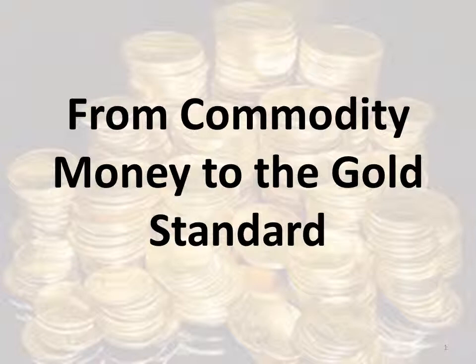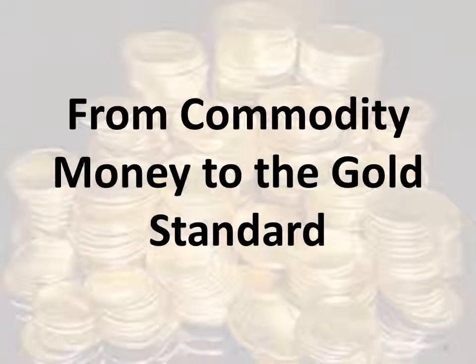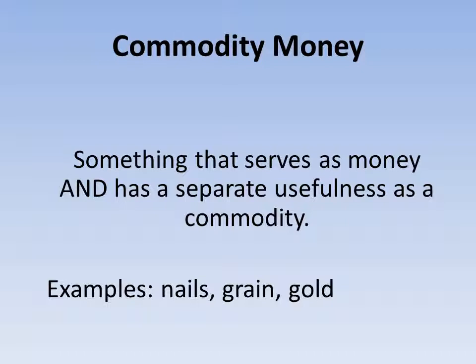When economists use the term commodity money, what we're referring to is something that satisfies our definition of money — that includes both functions of medium of exchange and store of value — but it also has to have a separate usefulness as a commodity. In history, colonial America for instance, nails were sometimes used as money. There are examples of grain throughout history, but probably the most classic example is gold or sometimes silver.